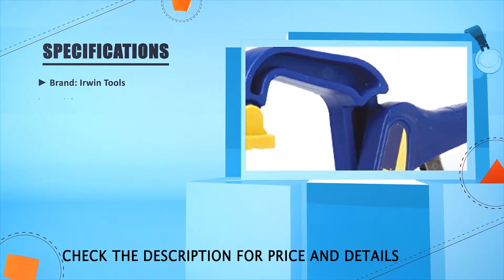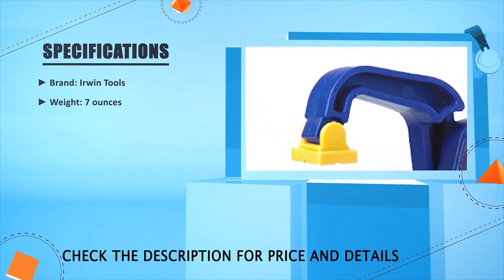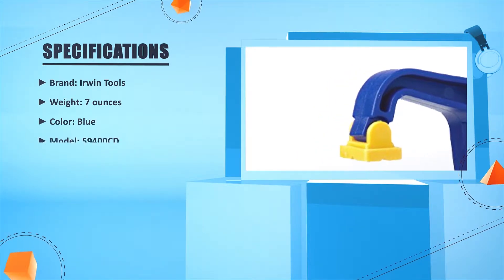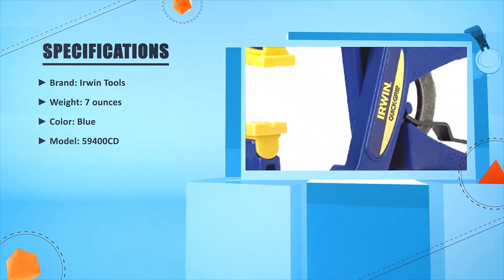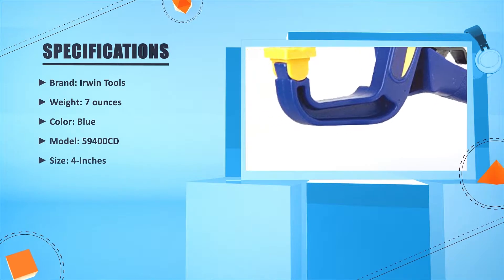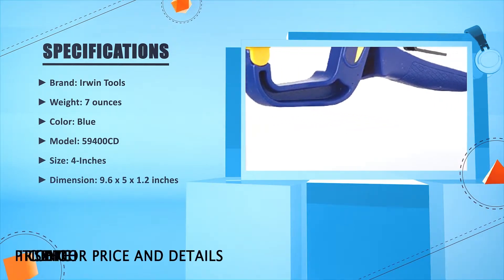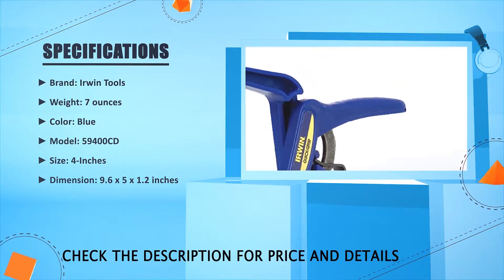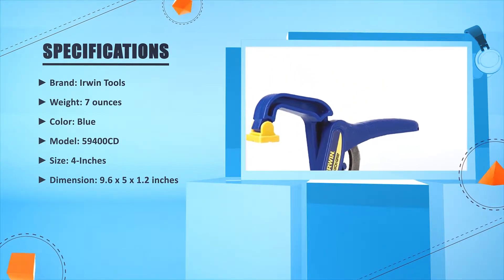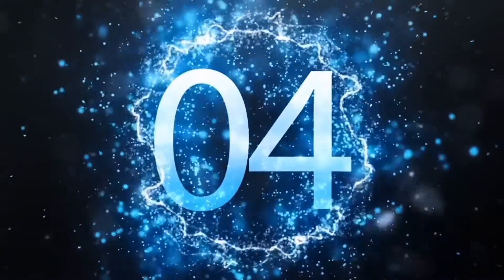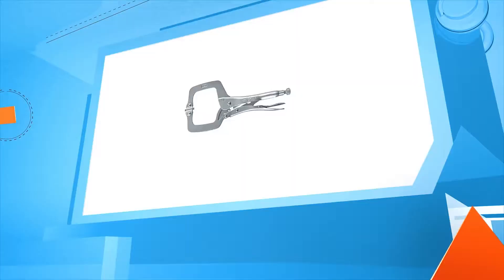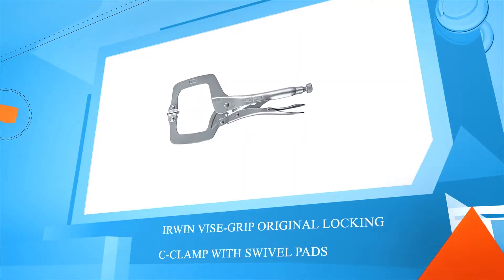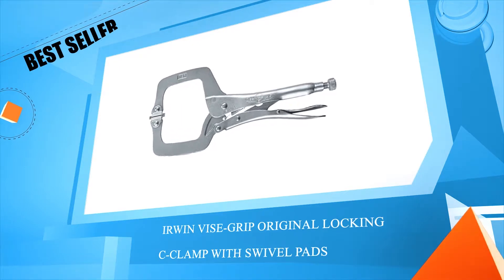IRWIN TOOLS 7 oz Blue 5-9400CD 4 inches 9.625 x 1.2 inches 10.520 x 2 Orvin vise grip original locking c clamp with swivel pads